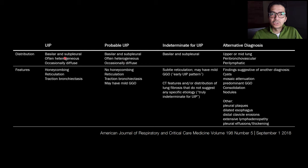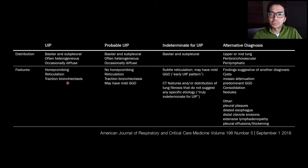The diagnosis was divided into four categories: UIP, probable UIP, indeterminate for UIP, and alternative diagnosis. The classic patient with UIP on CT will have a basilar and subpleural distribution of fibrosis with honeycombing, reticulation, and traction bronchiectasis.